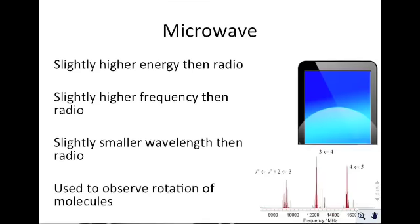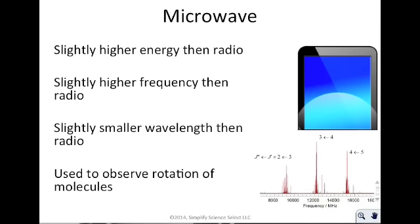Next, microwaves have slightly higher energy than radio waves — slightly higher frequency and slightly smaller wavelength. People often ask how you know when it goes from radio to microwave. The answer is it's a gradual transition — there's no sharp cutoff. It transitions between the two.